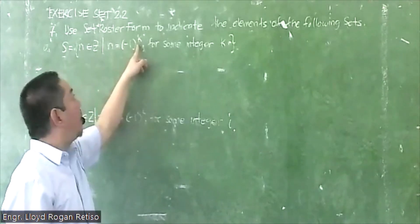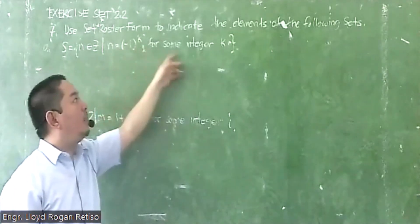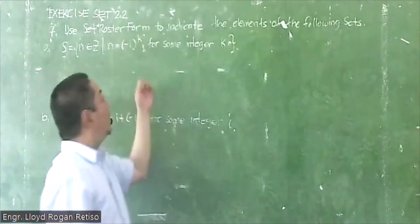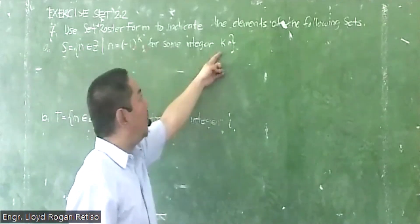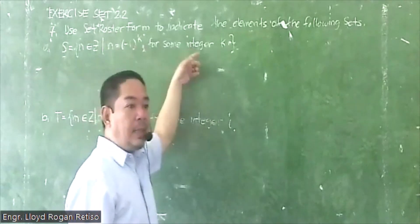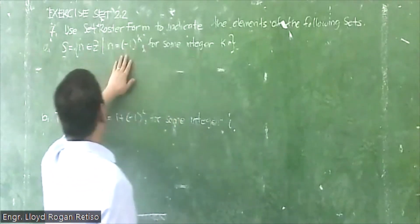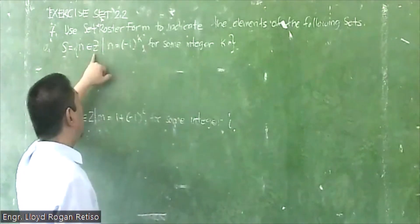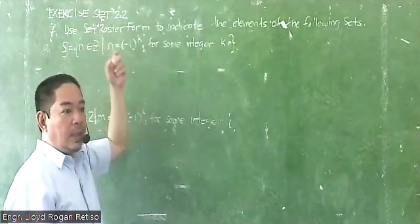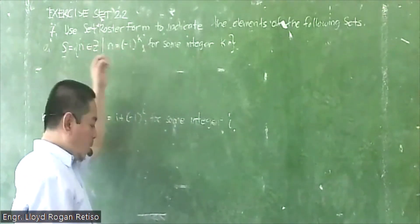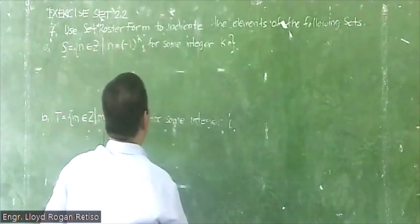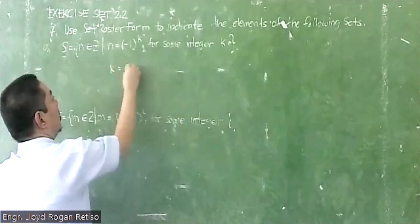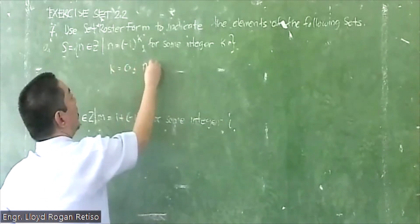raised to the power of k, for some integer k. So we need to find the value of n. Any value for k that is an integer — k such that the value of n is an integer, either negative, positive, or zero. So let's say let k equal zero.